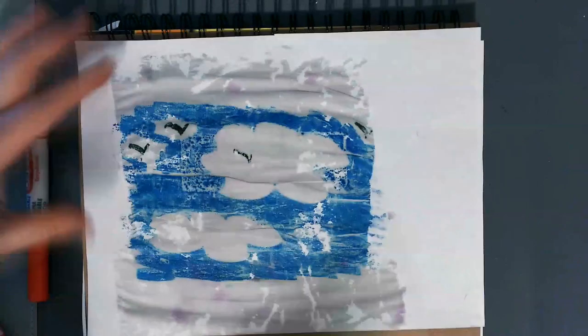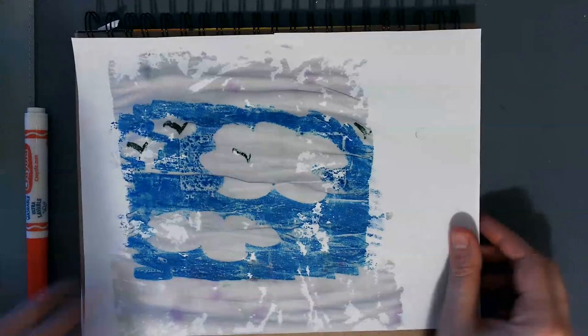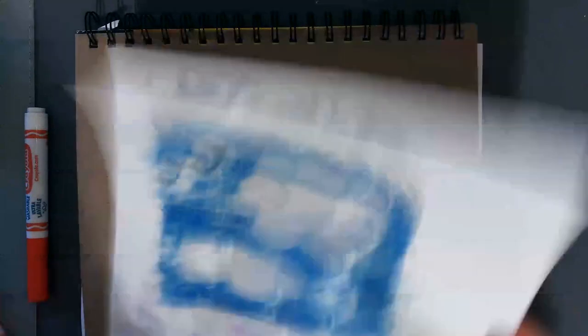When you peel it off, you have your monoprint. That's option number two for those of you that don't have foil but do have a sandwich bag.